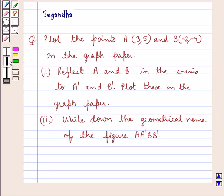Hello and welcome to the session. In this session we discuss the following question: plot the points A with coordinates (3, 5) and B with coordinates (-2, -4) on the graph paper. Reflect A and B in the x-axis to A' and B', and plot these on the graph paper. Write down the geometrical name of the figure A A' B B'.